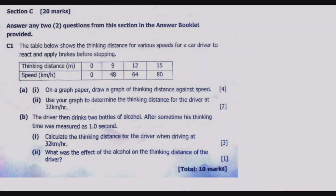Welcome viewers to another episode on SGC 12 exams. In this episode we continue looking at the 2019 August science paper 1. We are now looking at Section C where you are expected to answer two questions out of three questions, and each question carries 10 marks, which makes it 20 marks out of 85.